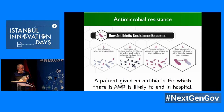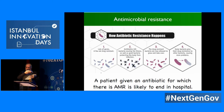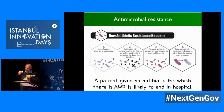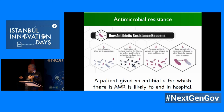A patient given an antibiotic for which there is AMR is likely to end up in hospital — or, as a doctor colleague of mine noted, probably ends up in the morgue quite often. It has a huge cost for society: hospital days, loss of work, loss of life. And when we use antibiotics where there is resistance, the damage is not just to patients but also that we are selecting the bacteria that best cope with that antibiotic — that's why doctors are so reluctant to use antibiotics when they are not needed.